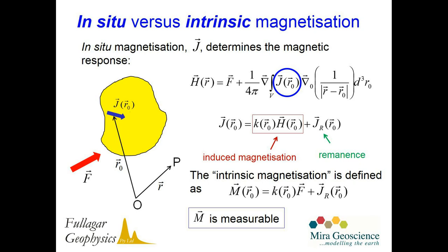The magnetisation in the ground is actually affected by the local magnitude of the magnetic field. If we've got fairly weakly magnetic material, that field will be very close to the ambient field. But in a situation with strong magnetic bodies and self-demagnetisation effects, we don't know what the direction of H is in the ground, and so we're unsure as to how to interpret our in-situ magnetisation in terms of physical properties measured in the lab using our known geomagnetic field. It's a little bit like having a model in electrical methods for the current and then trying to figure out what that means in terms of conductivity.